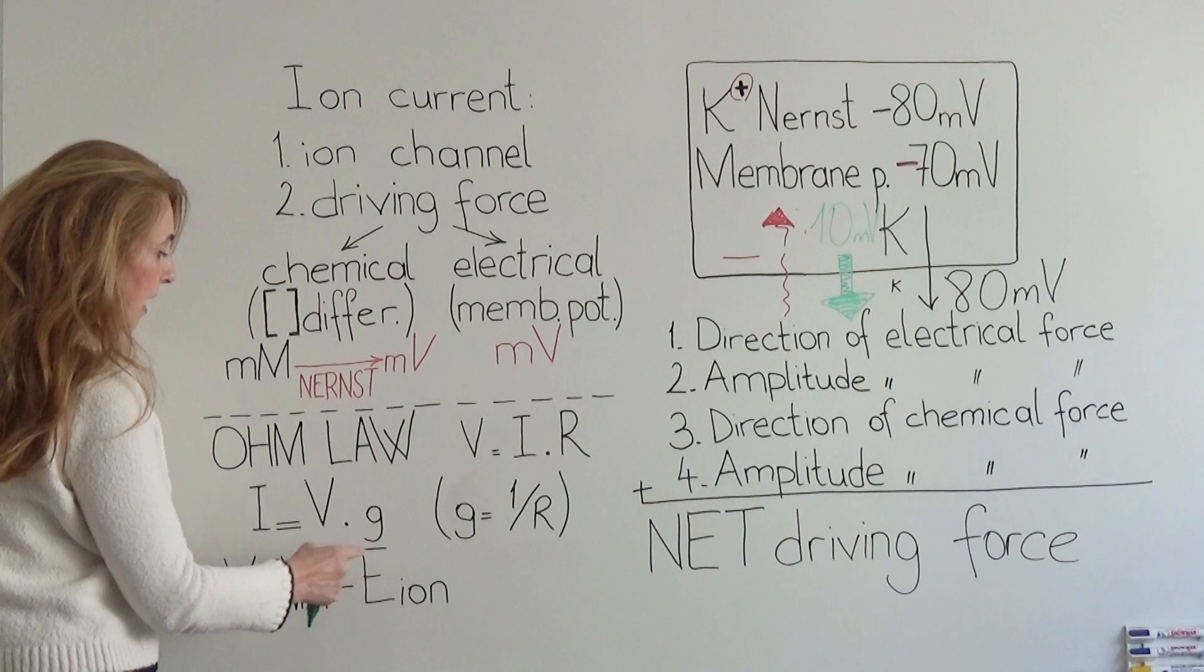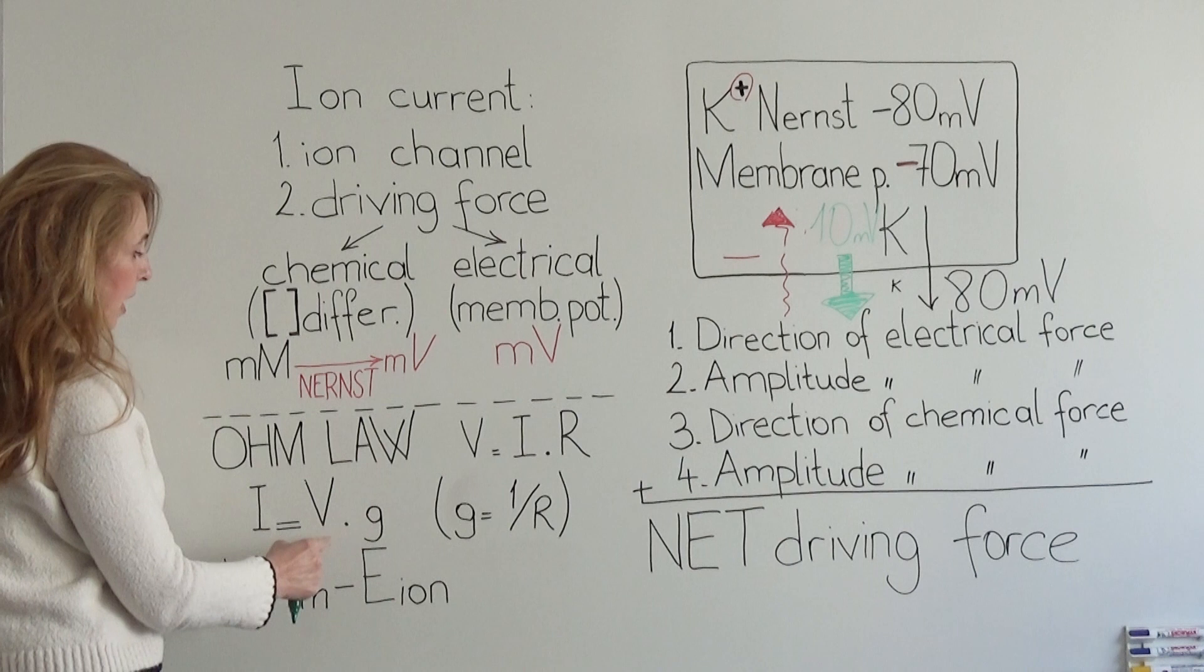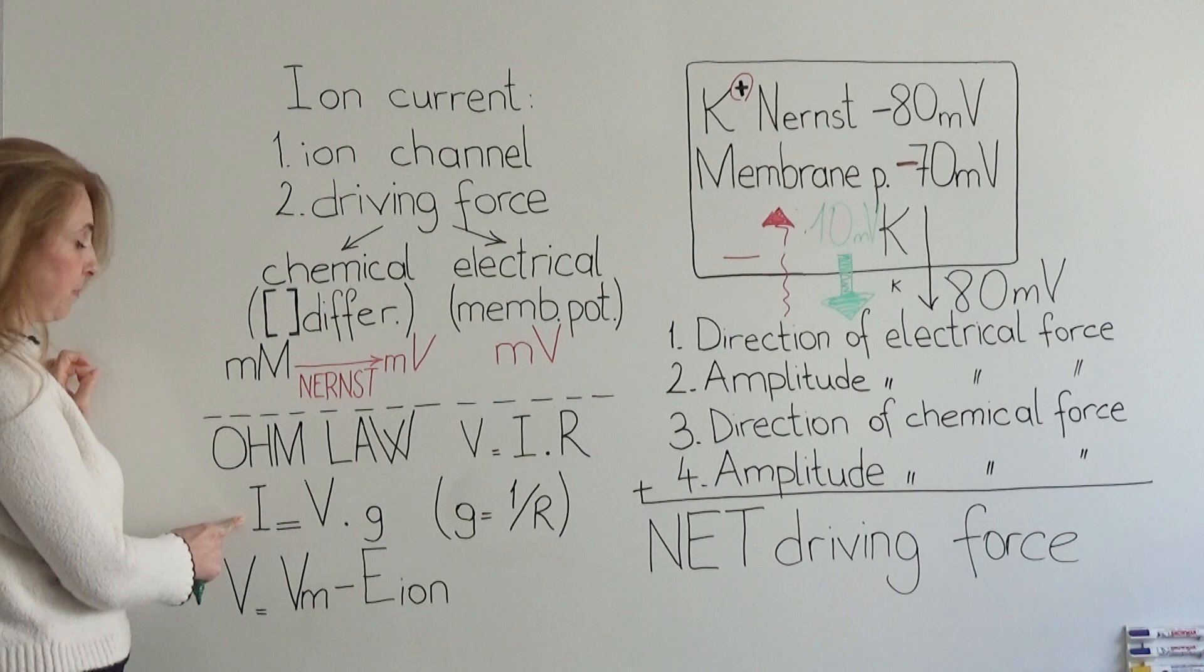If we have more ion channels open, the conductance is going to be bigger. If we have a bigger electrochemical force, these two will come together to produce a bigger ionic current.